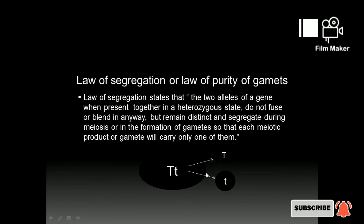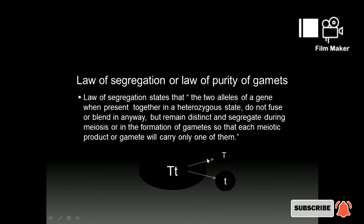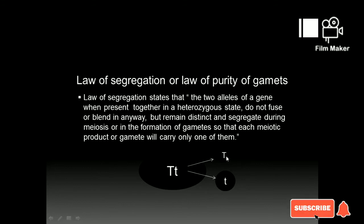In a heterozygous state, this is a phenotype — a tall plant, not a dwarf plant. This is capital T — this is a gamete. This is small t — this is also a gamete. Eventually, to cross the dwarf plant, small t and small t form the gametes.